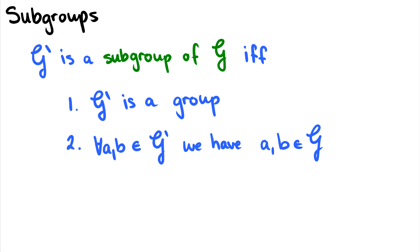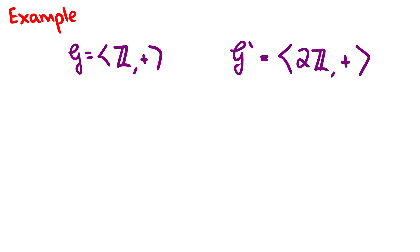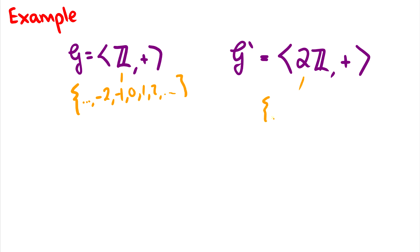What's an example of one? We have g with the integers under addition and g' with the even integers under addition. The integers would be ..., negative 2, negative 1, 0, 1, 2, ... and the even integers would just be ..., negative 2, 0, 2, and so on and so forth.